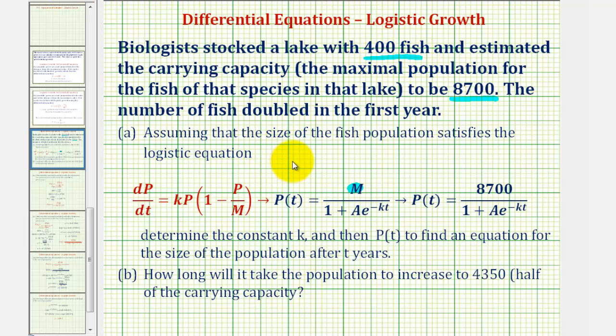We're also told the lake was stocked with 400 fish, which gives us the initial condition P(0) = 400. We're also told that the fish population doubled in the first year, which means P(1) = 800. So we'll find A using P(0) = 400, and then we'll find k using P(1) = 800.